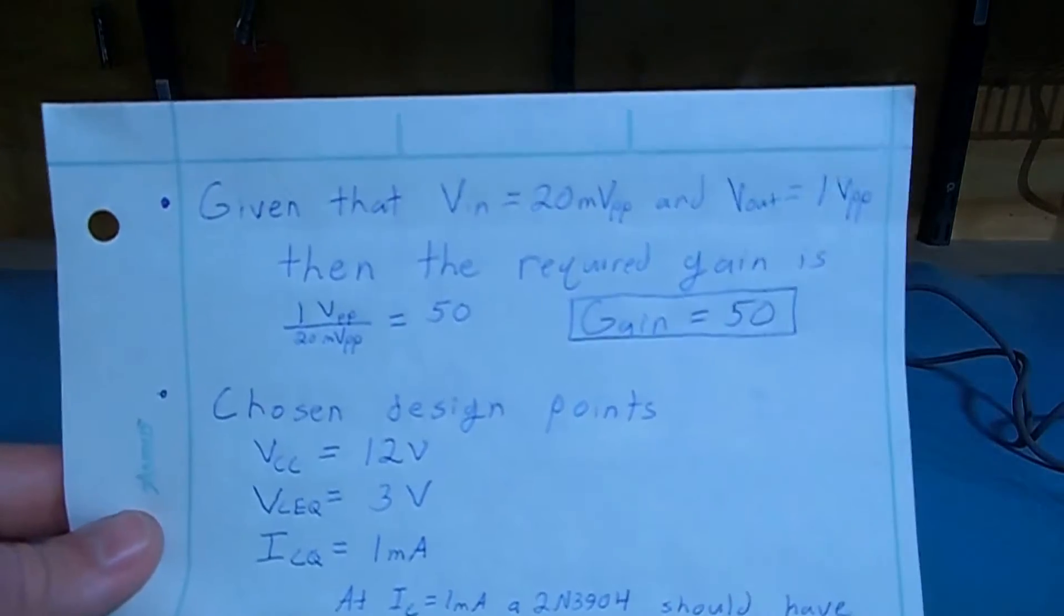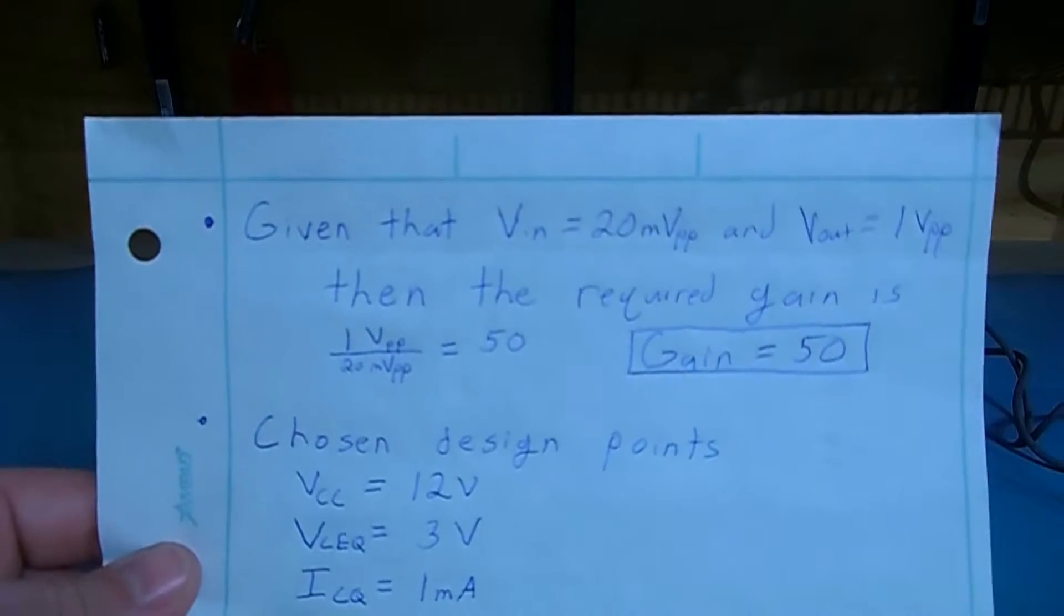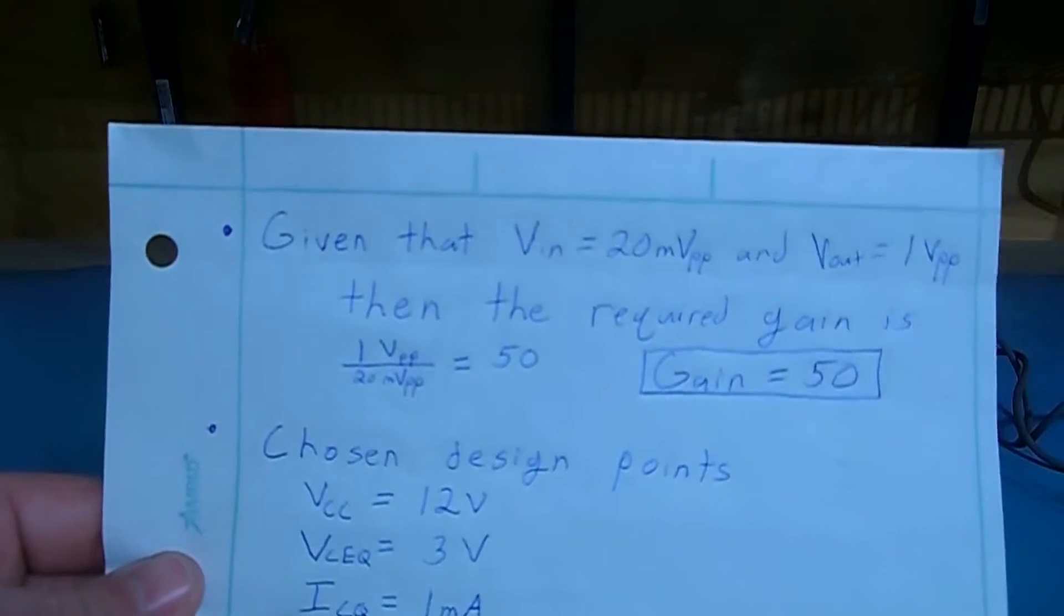So from those numbers of 1 volt peak-to-peak output and 20 millivolts peak-to-peak input, we get a required gain of 50.